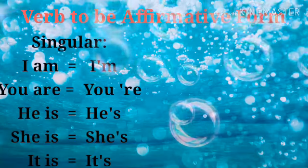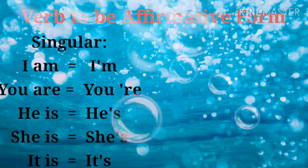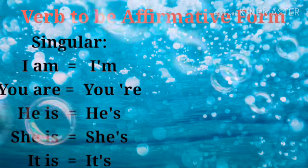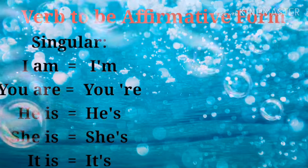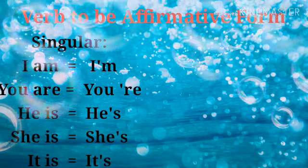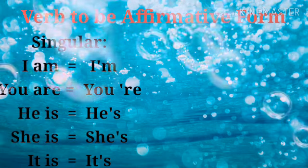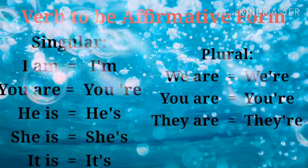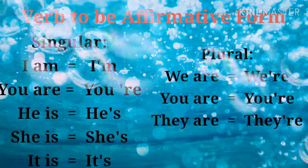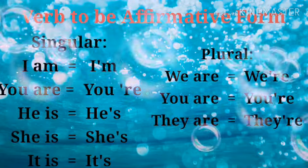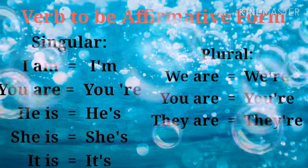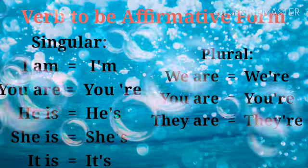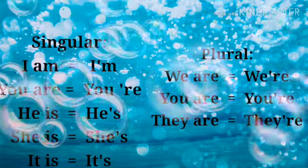Now let's see the affirmative form of the verb to be. Singular: I am / I'm, you are / you're, he is / he's, she is / she's, it is / it's. Now the plural form: we are / we're, you are / you're, they are / they're. Okay, take care, goodbye.